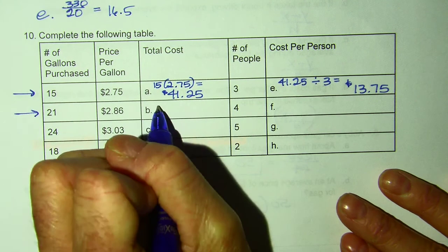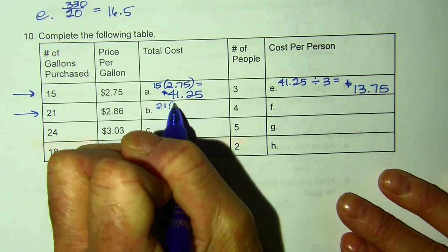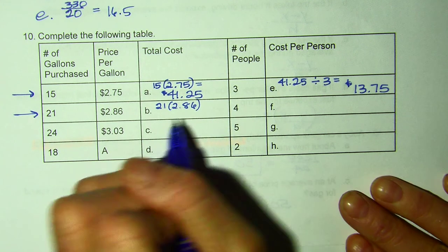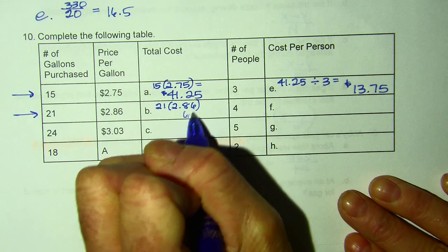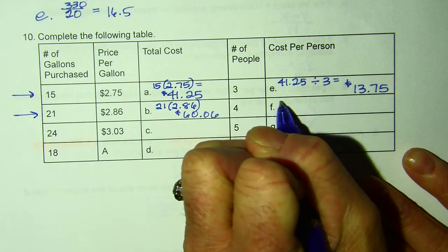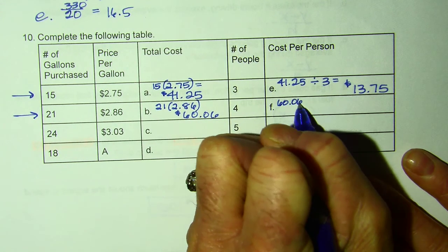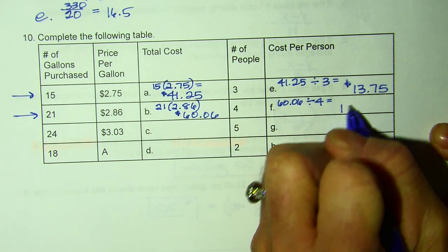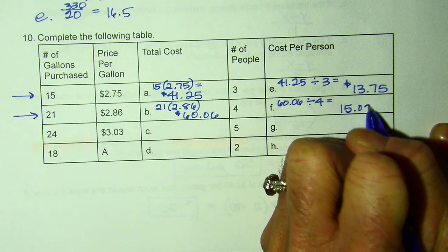And each person would owe $13.75. So that's what we're going to do in each row. So the next one, 21 gallons times the price per gallon. And in some cities, it's more. Some states, it's less. In California, our gas is typically higher than other places. So this would be $60.06. There are four people in the car, so you would take the total cost and divide it by four people.